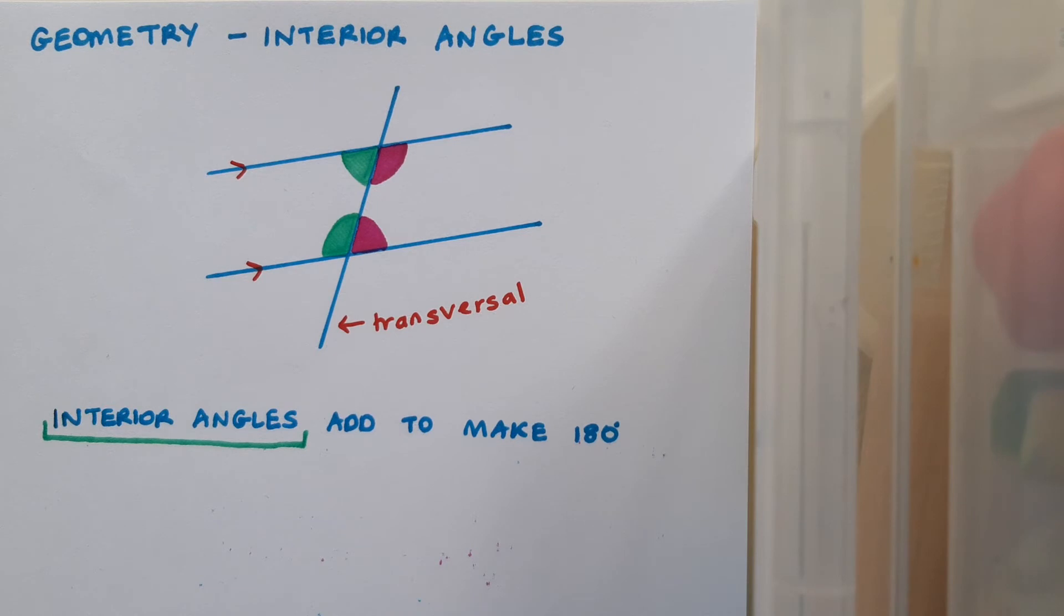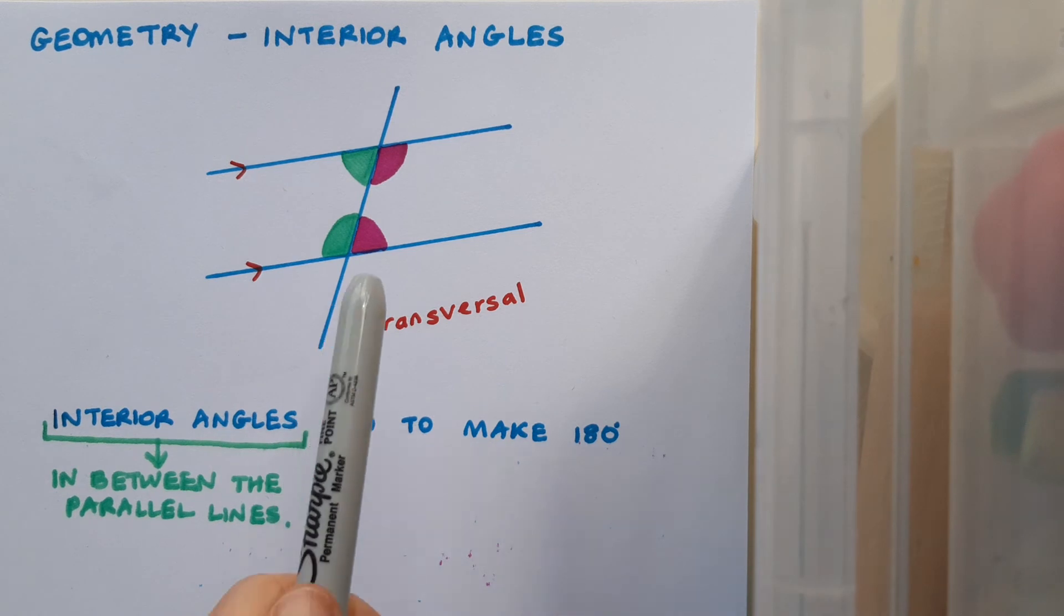Why do you think this rule is called interior angles? Well it's because interior angles are in between the two parallel lines. They're inside the parallel lines. And it's important to note that interior angles are always on the same side of the transversal as each other.